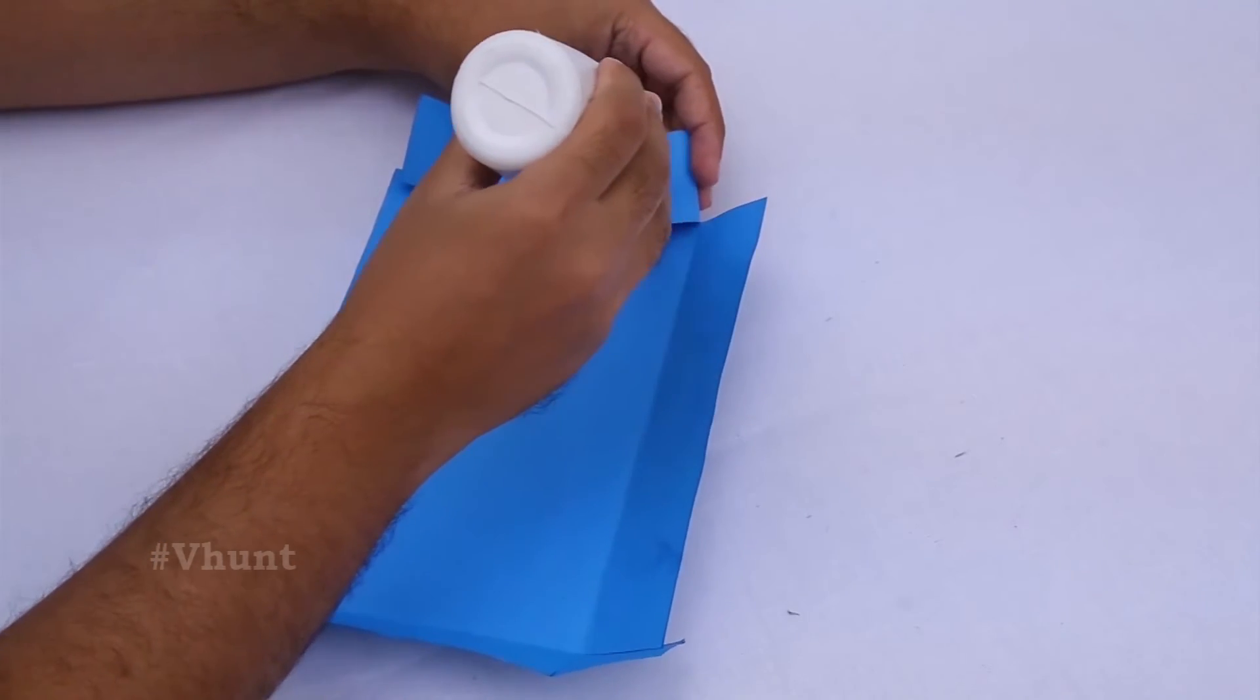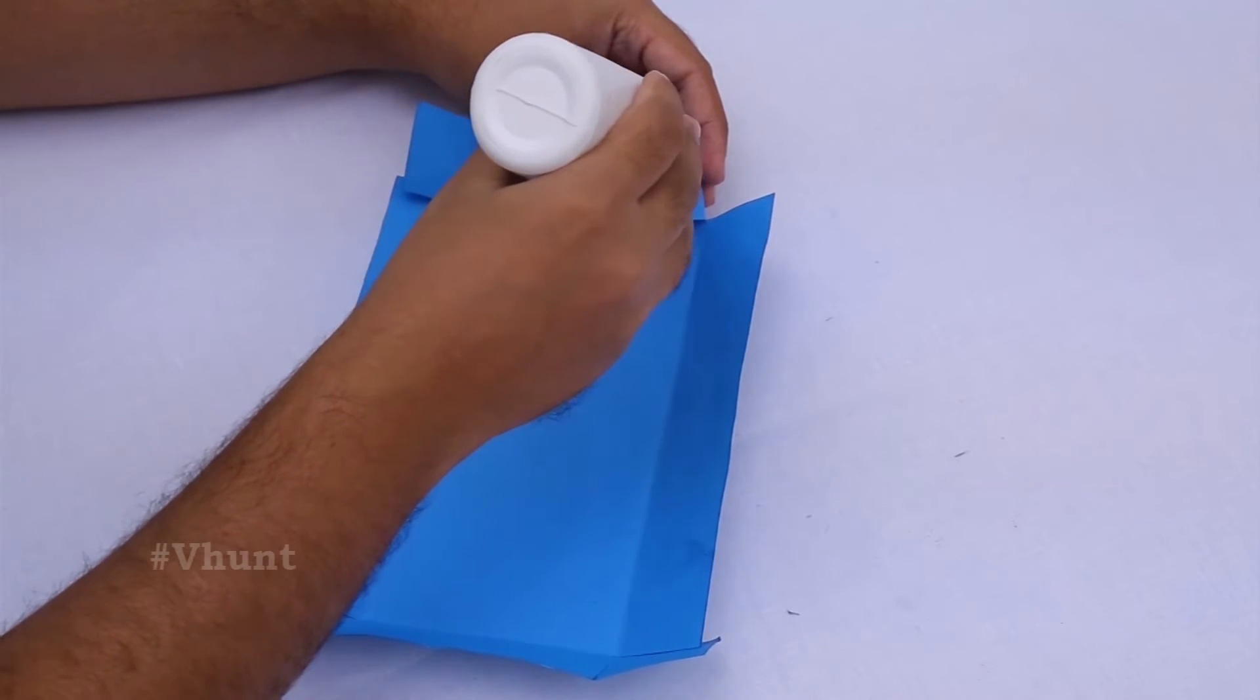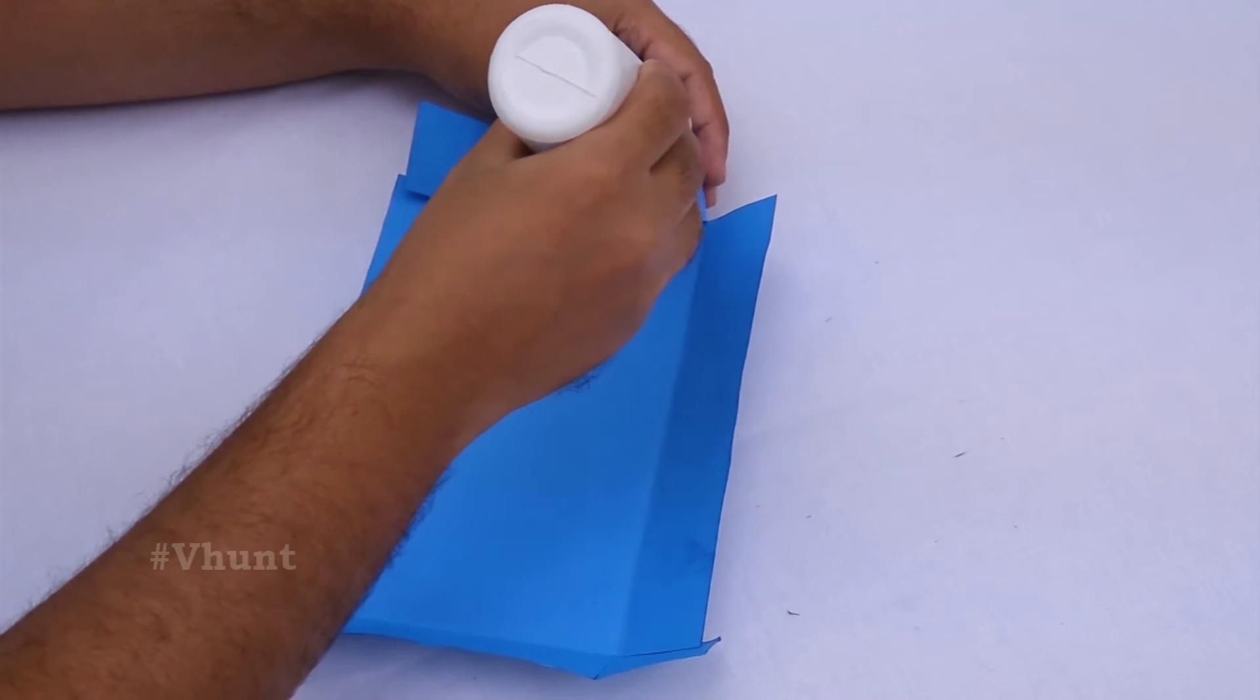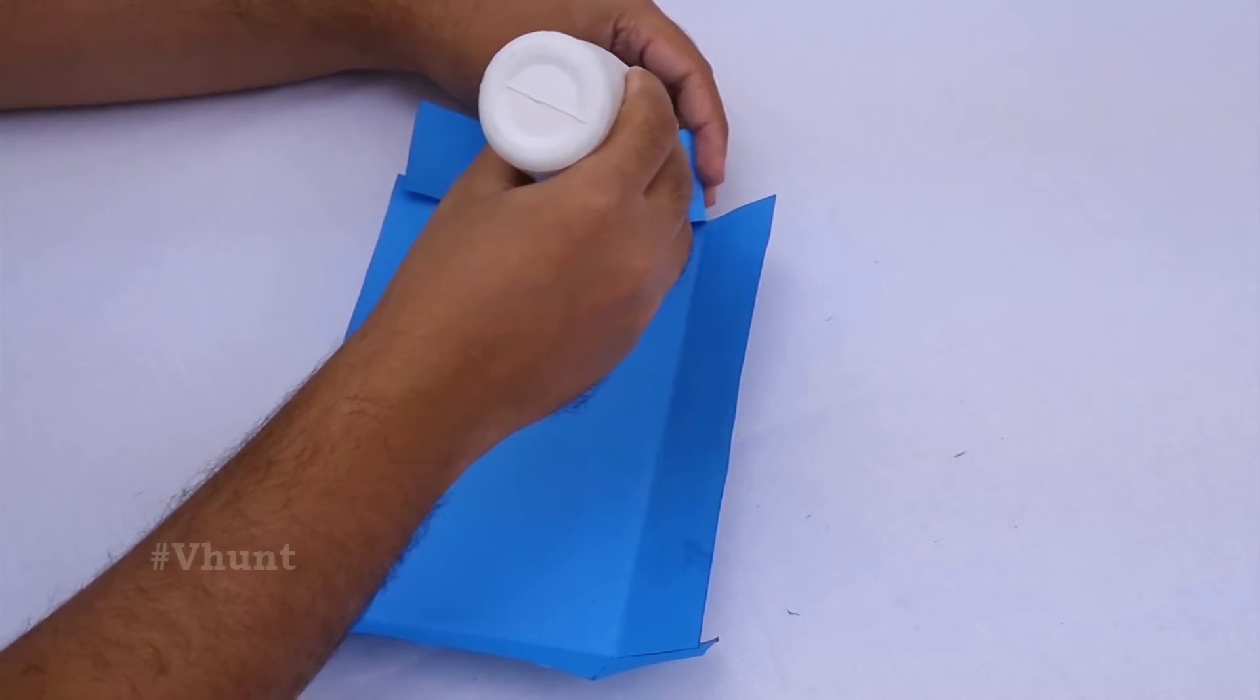Then apply glue on the square pieces. Follow the same step for the remaining three square pieces.